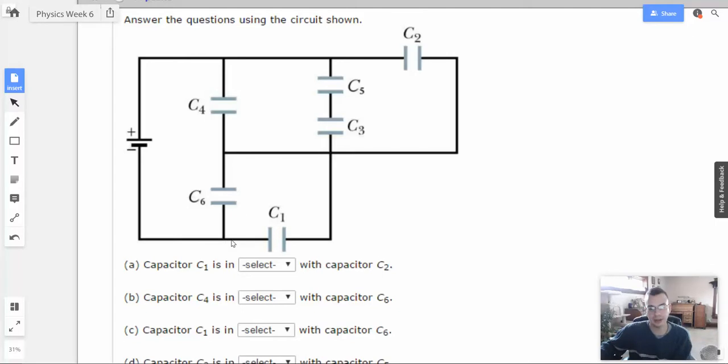C1 and C6 would be a good example. This voltage right here is the same. Across C6 right here, from this point to this point, will be the same as from this point to this point. They'll have the same voltage across them. Therefore, those will be in parallel.